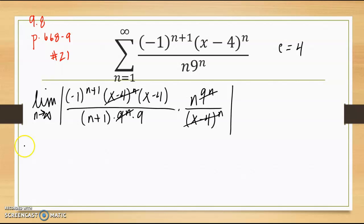I'm going to bring the absolute value of x minus 4 out front of the limit statement. Limit as n approaches infinity of n over n plus 1.